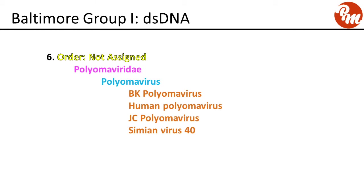The next group, order not assigned, family Polyomaviridae, genus polyomavirus. This includes BK polyomavirus, human polyomavirus, JC polyomavirus, and simian virus 40.